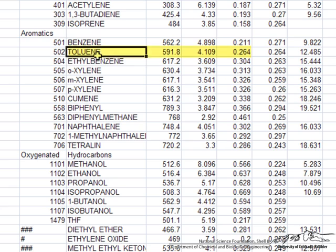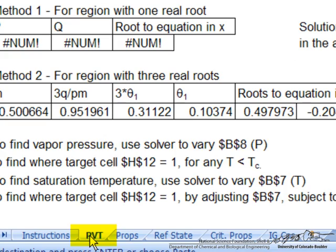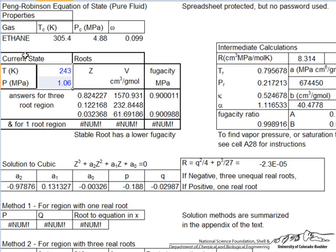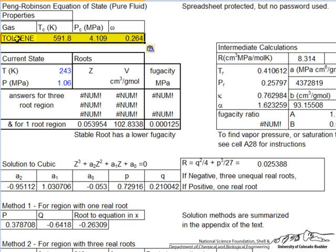So if I select toluene and the three properties, copy, go back to the PVT tab, and paste here, I've entered in the properties for toluene.